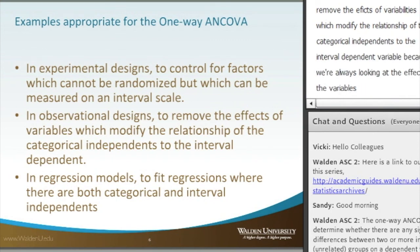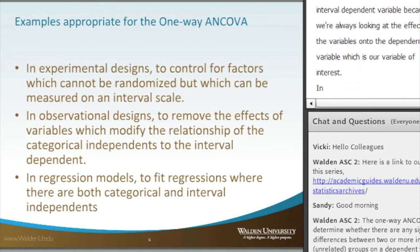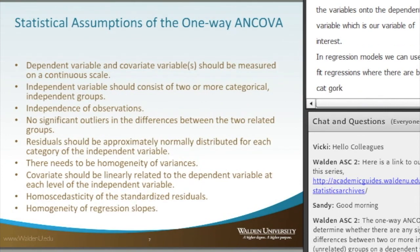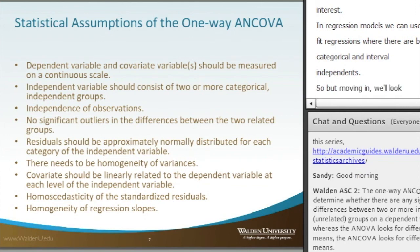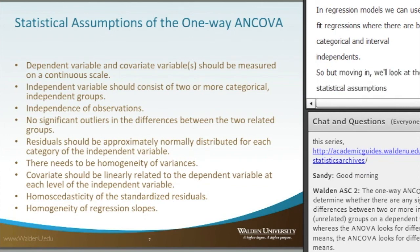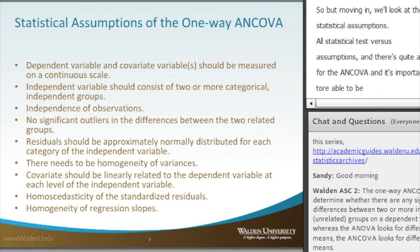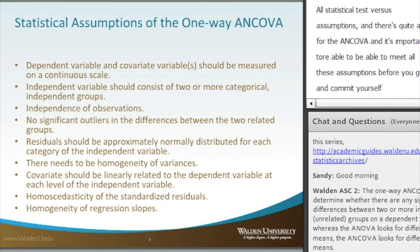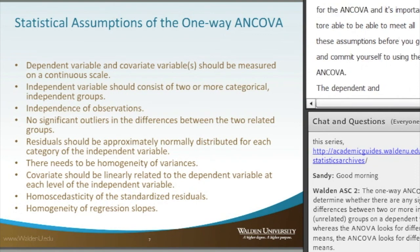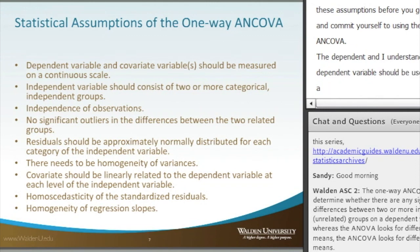In regression models, we can use it to fit regressions where there are both categorical and interval independent variables. Now we'll look at the statistical assumptions, because all statistical tests have assumptions, and there are quite a number for the ANCOVA. It's important to meet all of these assumptions before committing to using the ANCOVA. The dependent variable and covariate variable should be measured on a continuous scale, and the independent variable should consist of two or more categorical independent groups — similar to ANOVA and the t-test.